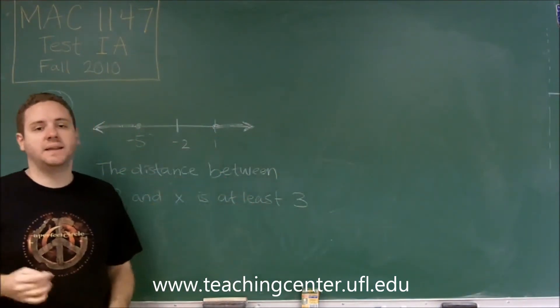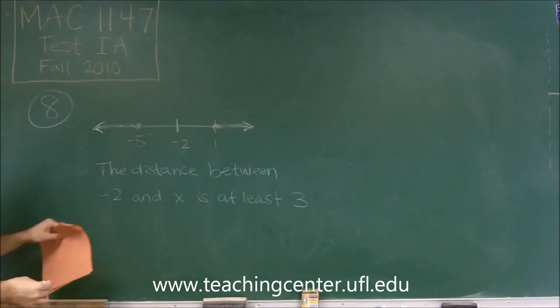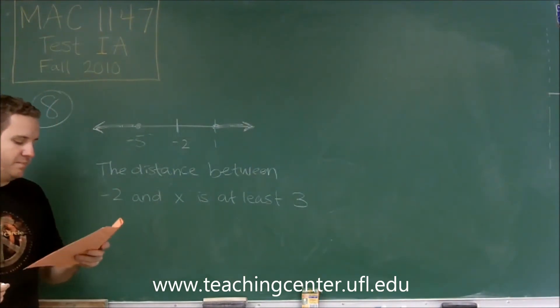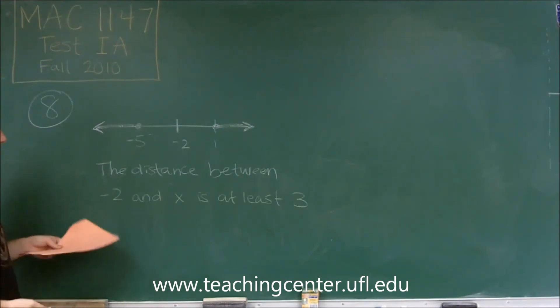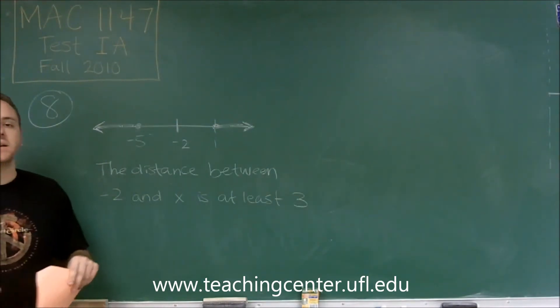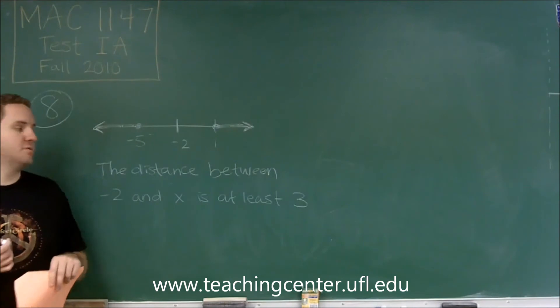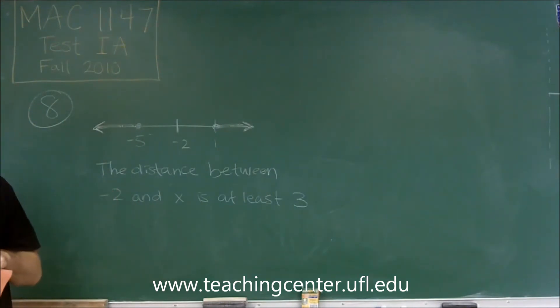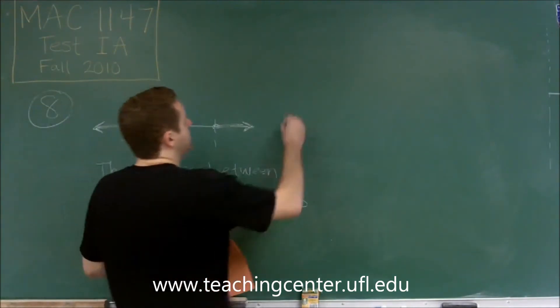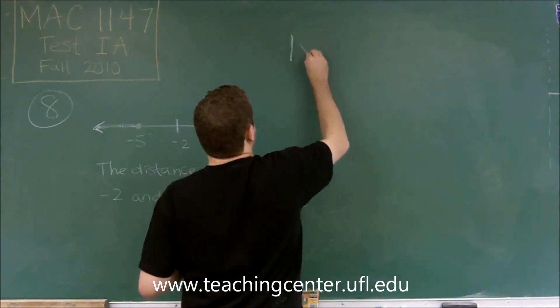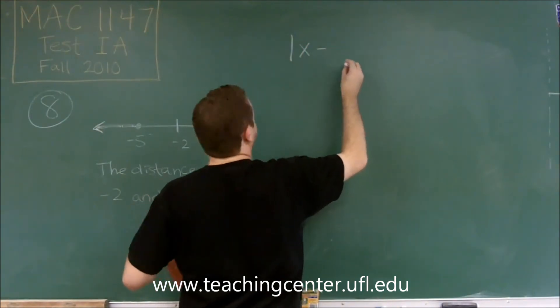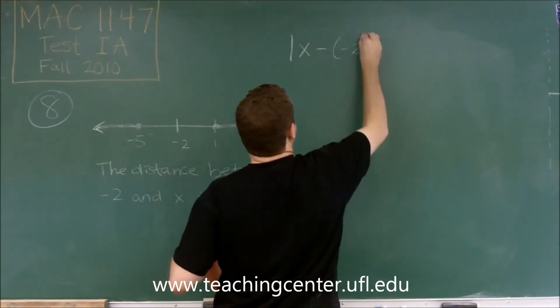So x being any of those numbers. The distance between x and negative 2, or negative 2 and x, is the absolute value of their difference. Remember that a distance is always positive, so you have to do the absolute value. We do the absolute value of x minus our point. Our point is negative 2.